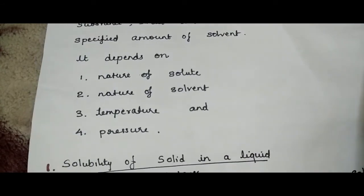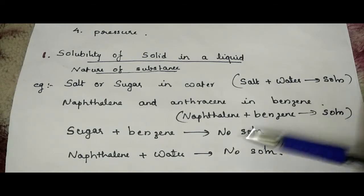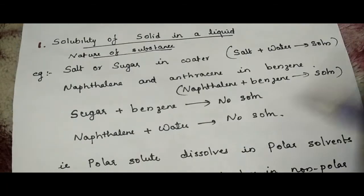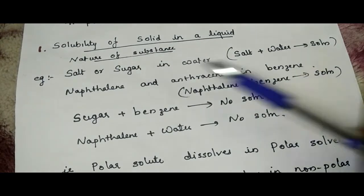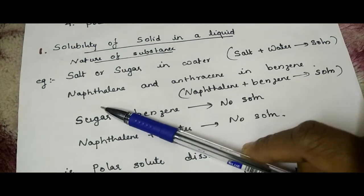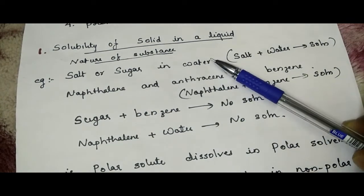First, we can study about solubility of solid in a liquid. Examples of solid in a liquid are salt in water or sugar in water. Other examples are naphthalene in benzene or anthracene in benzene. Sugar will not dissolve in benzene, and salt will not dissolve in benzene. Similarly, naphthalene will not dissolve in water, and anthracene will not dissolve in water.